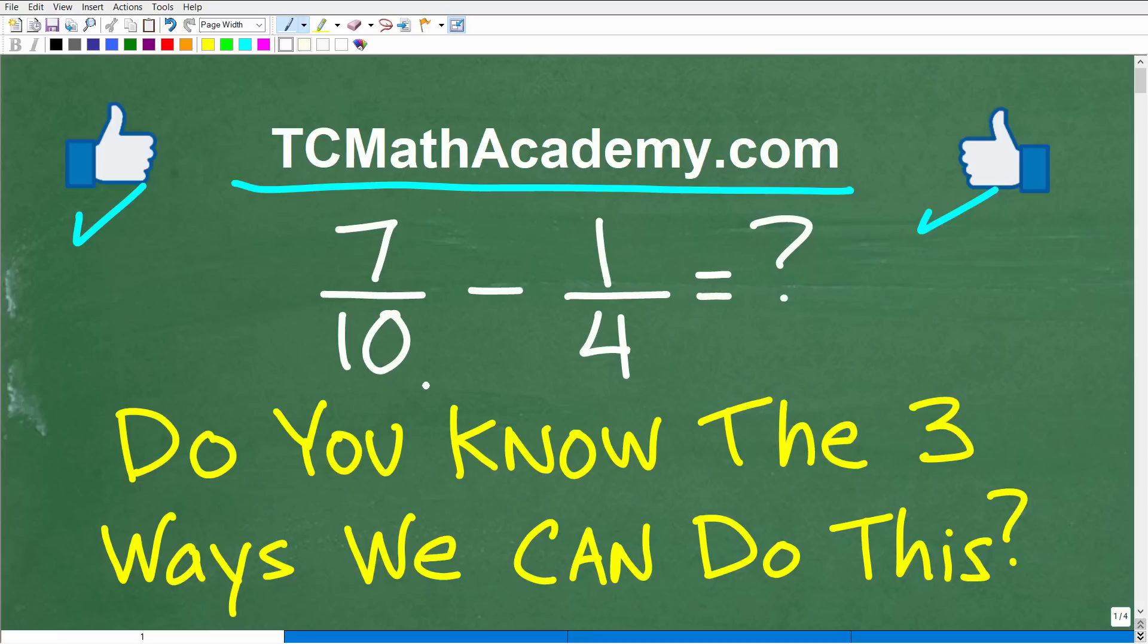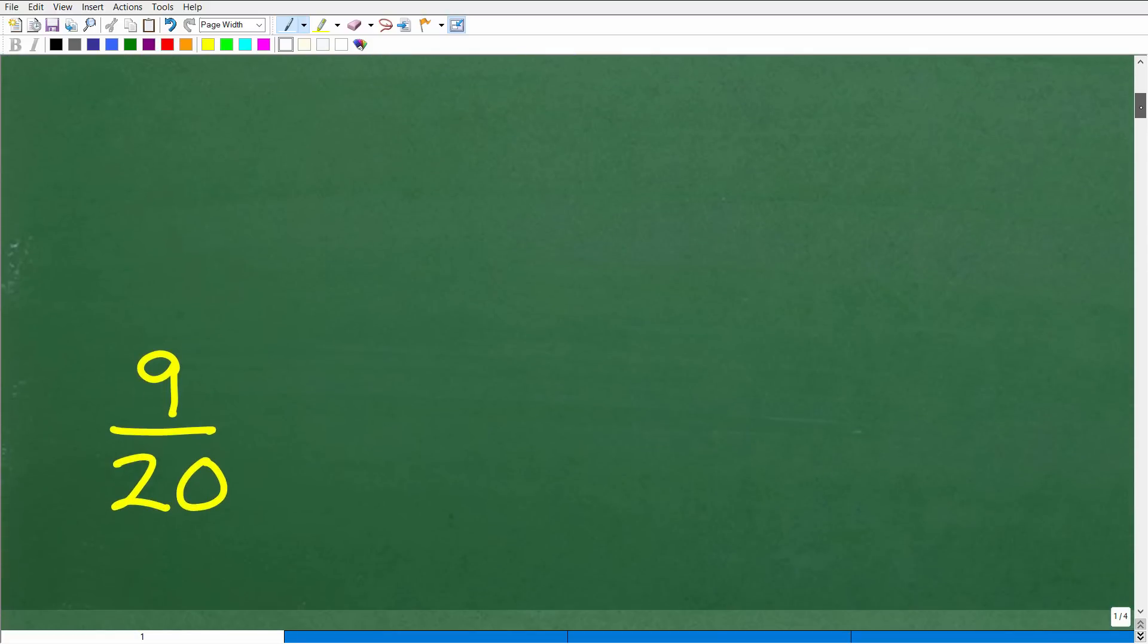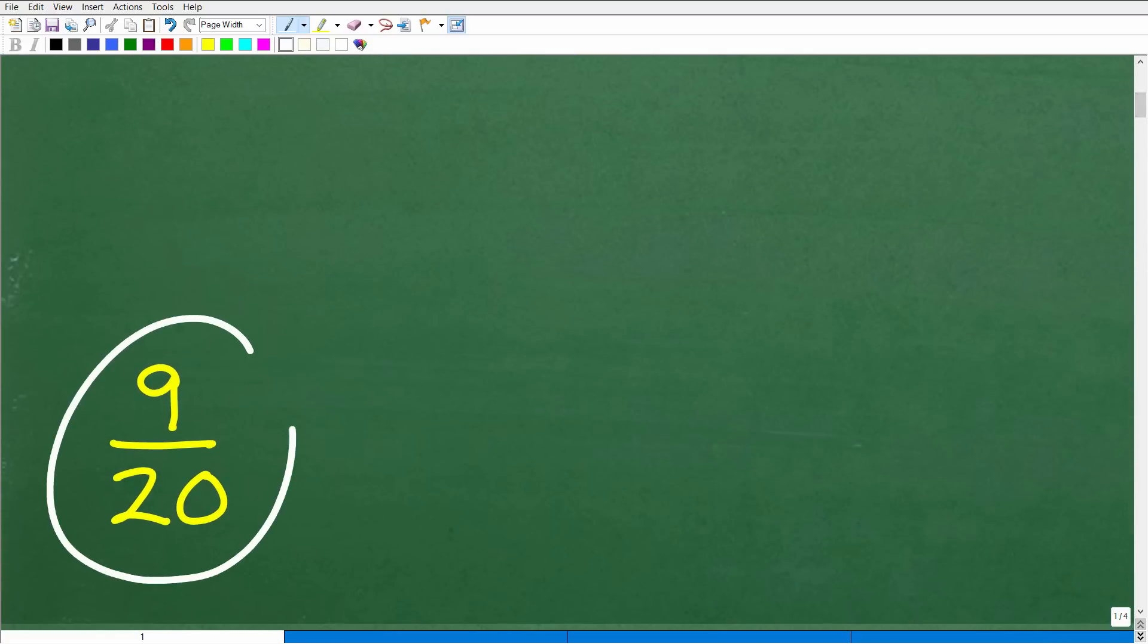Okay, so let's take a look at the answer here. We have 7 tenths minus 1 fourth. What is the correct answer? Let's go ahead and see it right now. Here it is: 9 twentieths, 9 over 20.